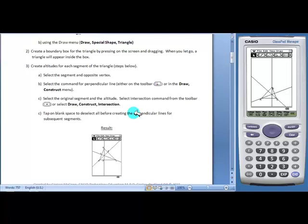Students will then construct the intersections of the altitudes using the intersection command. Students will select the original segment and its altitude and use the intersection command.